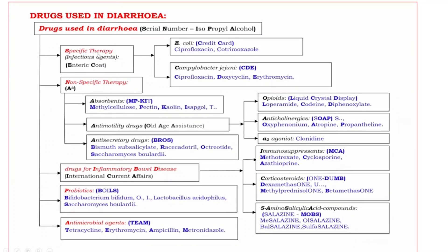First, Specific Therapy, in which drugs are used to treat against infectious agents. The infectious agents mnemonic is E-C: E means E. coli, C means Campylobacter Jejuni. The drugs that act against E. coli are C-C: C for Ciprofloxacin, and one more C for Co-Trimoxazole.